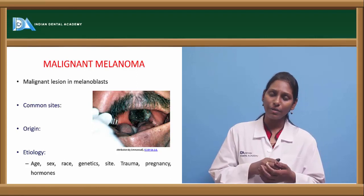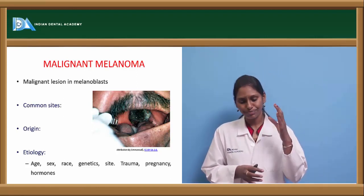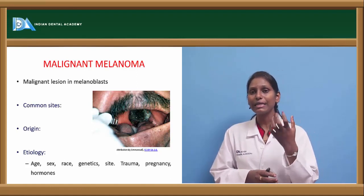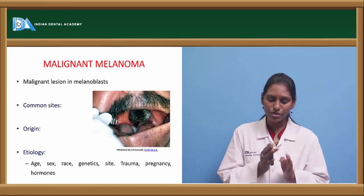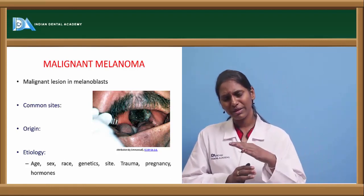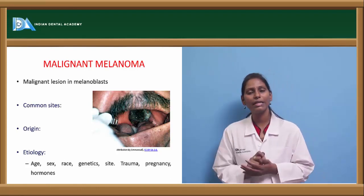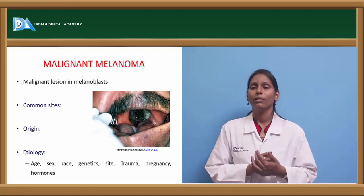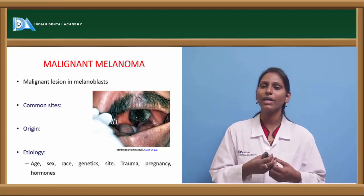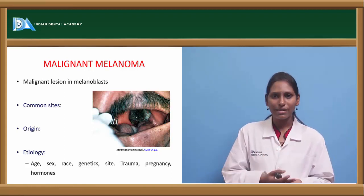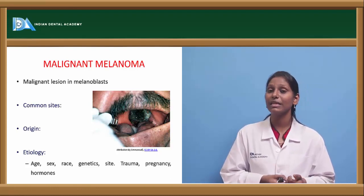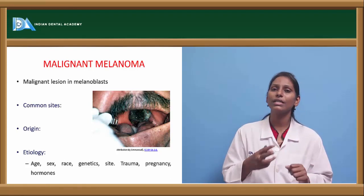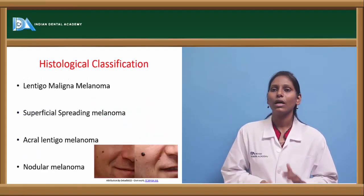In malignant melanoma there are two types of cellular features: spindle cell type and Pagetoid type. In the Pagetoid type we have vacuolated cytoplasm with granules. Once these cells invade the epidermis it indicates malignancy. Tumor cells invading the sub-epidermal lymphatics also indicates malignancy. The four histological variants are: lentigo maligna melanoma, superficial spreading melanoma, acral lentiginous melanoma, and nodular melanoma.